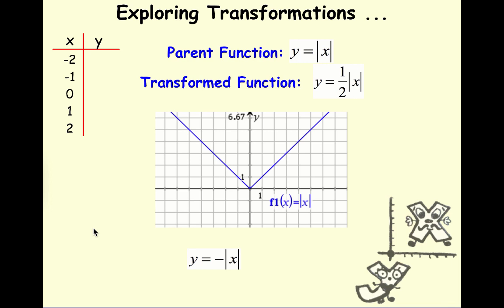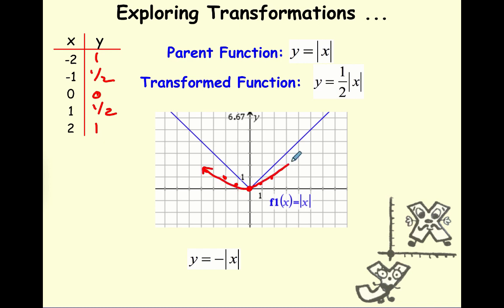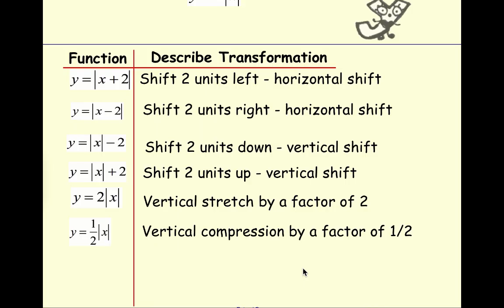Now let's complete the table of values for y equals one half times the absolute value of x. The vertex is still at 0 comma 0, but I get negative 1 comma one half and negative 2 comma 1. Looking at those distances, in the parent function the point was at negative 1 comma 1 — one unit above the x-axis — but now it's only half a unit above. The graph is being squeezed down toward the x-axis, so we call this a vertical compression by a factor of one half.